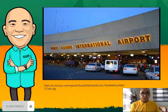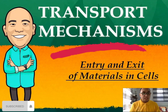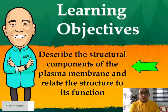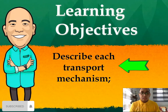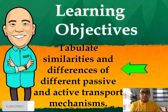For today, we will be discussing cell transport mechanisms — specifically the entry and exit of materials in cells. Our learning objectives are: first, describe the structural components of the plasma membrane related to structure and function; second, describe each transport mechanism; and third, tabulate the similarities and differences of different passive and active transport mechanisms.